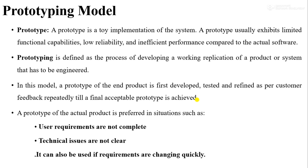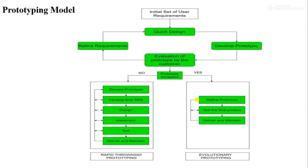This is how we develop software using the prototyping model. This model is used in situations such as when user requirements are not clear, when technical issues are not clear, and when requirements are changing quickly. These are the three scenarios where we can use the prototyping model.